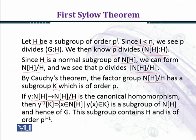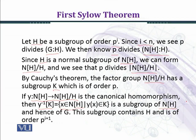If φ from N(H) to N(H)/H is the canonical homomorphism, then the pre-image of K is given by {x ∈ N(H) : φ(x) ∈ K}, which is a subgroup of N(H) and hence of G.